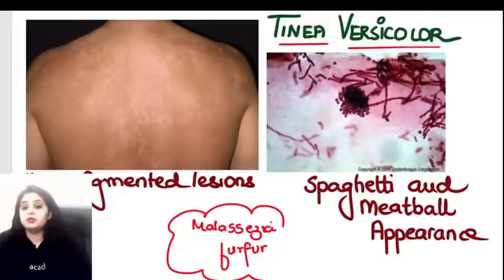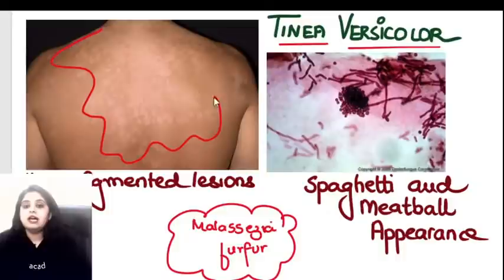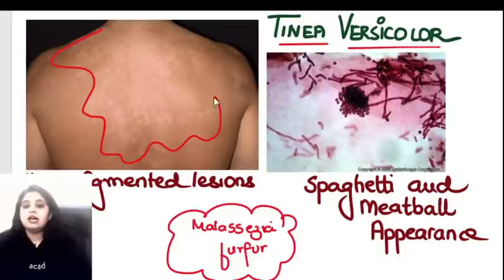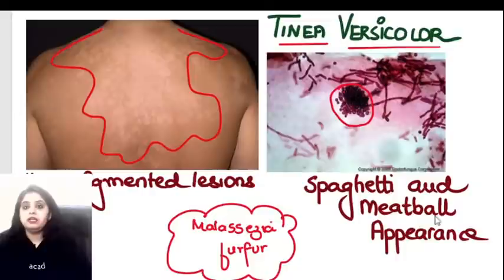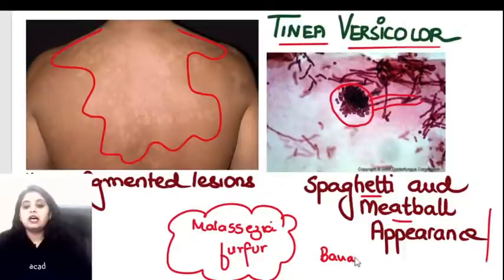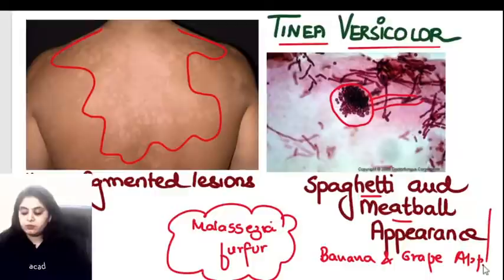Malassezia furfur causes tinea versicolor. It presents as hypopigmented lesions. Under the microscope, the round dotted form is the yeast form called the 'meatball,' and the filamentous hyphae are called 'spaghetti.' So this is described as the spaghetti and meatball appearance. For vegetarians, it's also called the banana and grapes appearance.